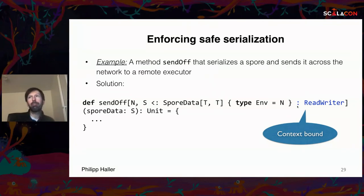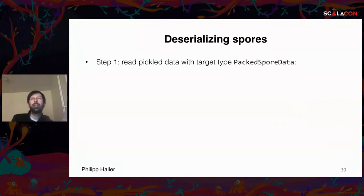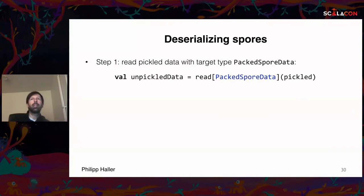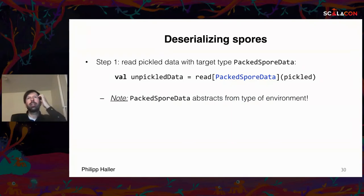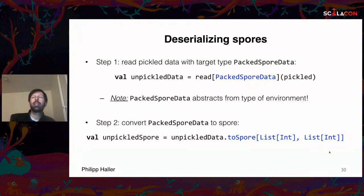How do we deserialize? We deserialize with a target type called `PackedSporeData`, which abstracts from the environment type — we don't need to know it. When we have a `PackedSporeData` we can simply convert it to a spore by providing the parameter and return types, which are usually known in frameworks like Spark.